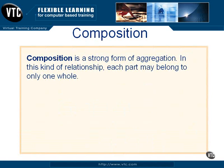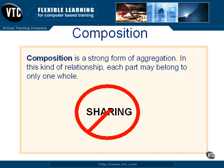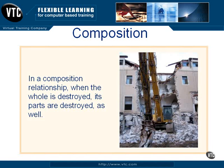Composition is a strong form of aggregation. In this kind of relationship, each part may belong to only one whole. Unlike a fish in a school that could swim away and become part of a different school, in composition each part belongs to only one whole. Think of your own living room — it's part of your house, not your neighbor's house; it can't be shared with another house. This is what we call the no-sharing rule: a part in a composition relationship may not belong to any other whole. When the whole is destroyed, its parts are destroyed as well. You can see from the illustration here that when a building is destroyed, the rooms that compose it are also destroyed.